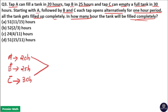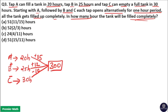Take the LCM of 20, 25, and 30. The LCM of 20, 25, and 30 is 300. Now 20 goes 15 times in 300, 25 goes 12 times in 300, and 30 goes 10 times in 300. This means the tank capacity is 300 liters — the total work is 300.